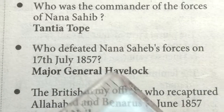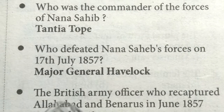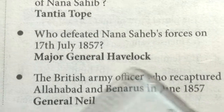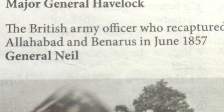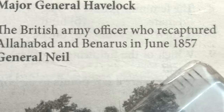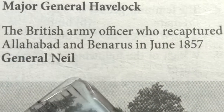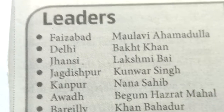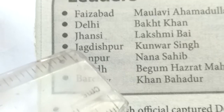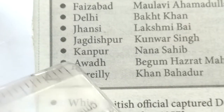Who defeated Nana Sahib's force on 17th July 1857? Major General Havelock. Leaders from Faizabad, Delhi, Jhansi, Jagdishpur, Kanpur, Awadh, and Bareilly are also noted among key figures of the revolt.